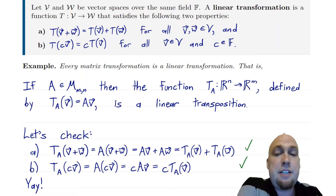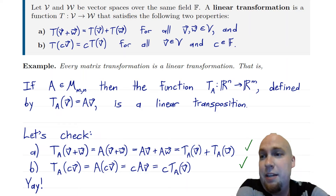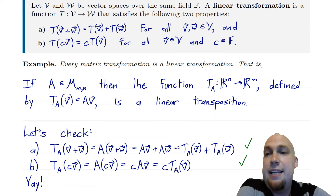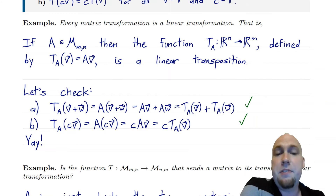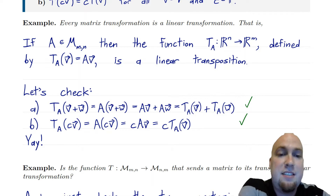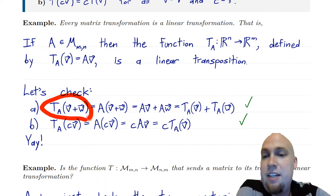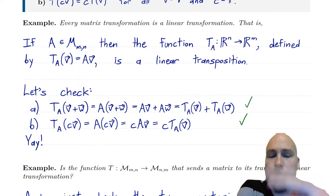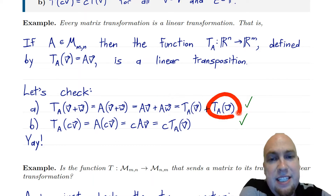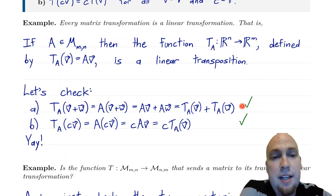It turns out that this function TA, which multiplies a vector by the matrix A, is a linear transformation. To check that, you verify the two defining properties. Property A: applying TA to the sum V plus W gives A times (V plus W), which by distributivity of matrices equals A times V plus A times W, which is TA(V) plus TA(W). That's exactly what we want — property A holds.